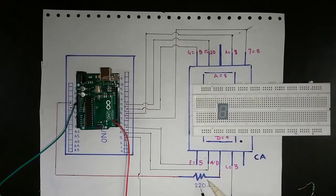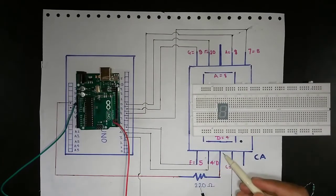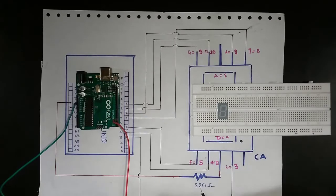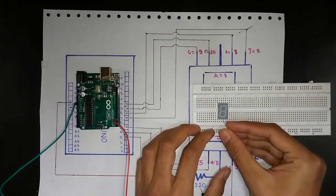As we can see in the circuit, the common pin of the 7-segment display is connected to 220 ohm resistor. So we need to connect a 220 ohm resistance to the common pin of the 7-segment display.